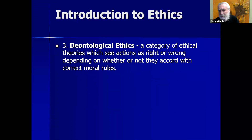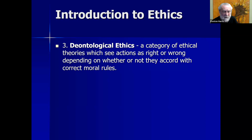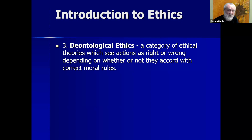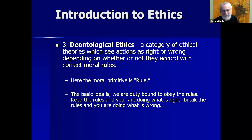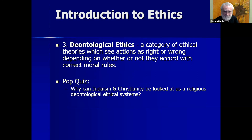The third category of ethical theories we're going to look at is deontological ethics — a category of ethical theories which see actions as right or wrong depending on whether or not they accord with correct moral rules. The moral primitive driving these theories is the notion of the moral rule. Deontology comes from the word 'deont,' meaning duty. It's a duty-based kind of ethical theory. We are duty-bound to behave in certain ways and to refrain from behaving in other ways. Keep the rules and you're doing what's right; break the rules and you're doing what's wrong.